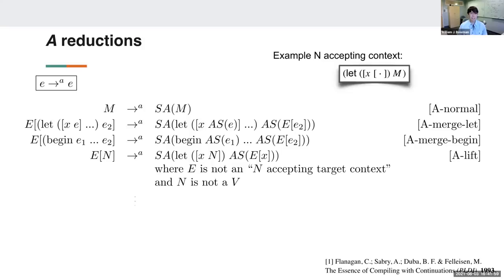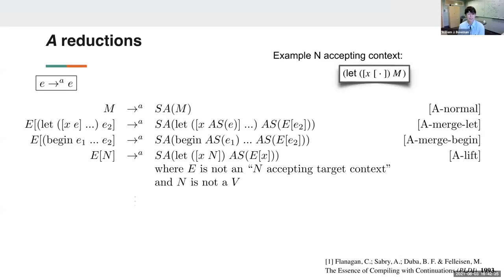The A-reductions perform the ANF translation lazily — one head term at a time — marking the rest for translation. ANF is a great test of this strategy because it involves context rewriting, whereas most compiler passes are more local. I have all of this implemented in PLT Redex. Let me do a demo and walk through a couple of rules.